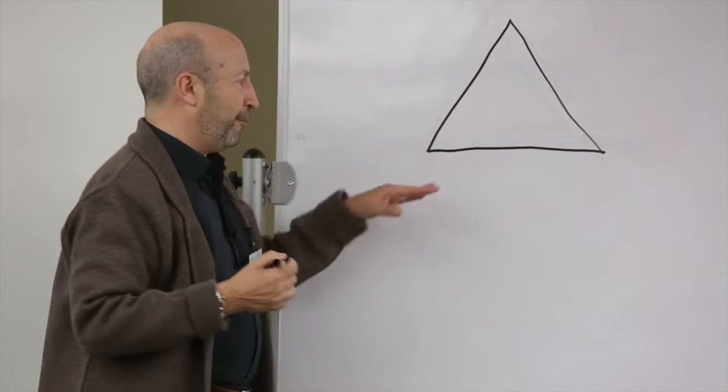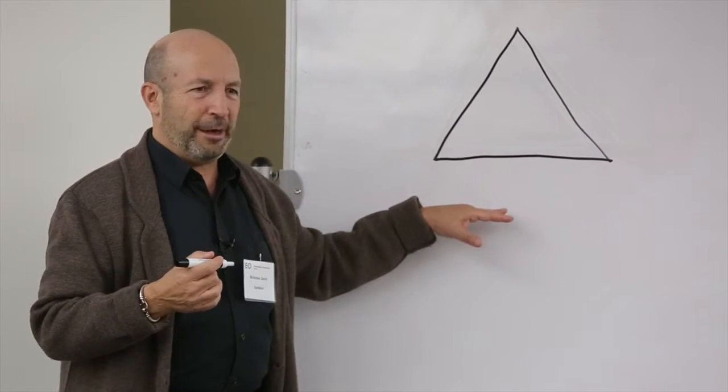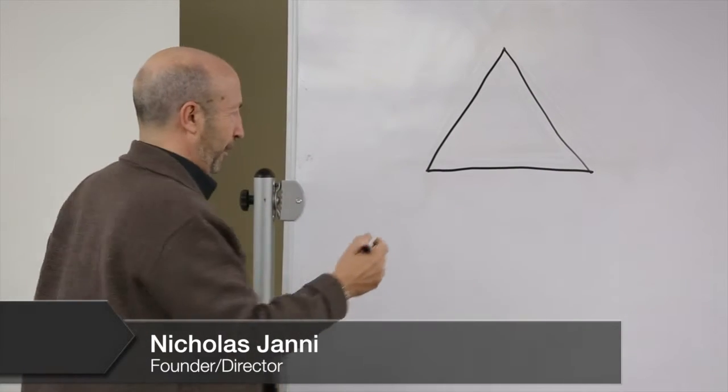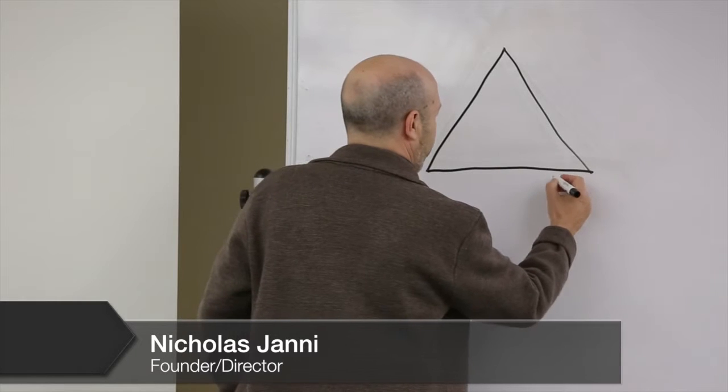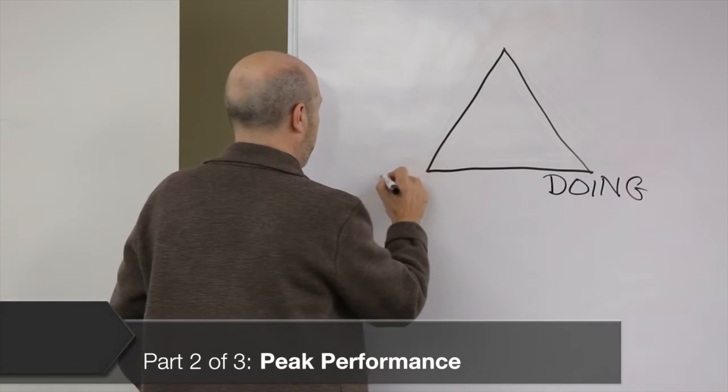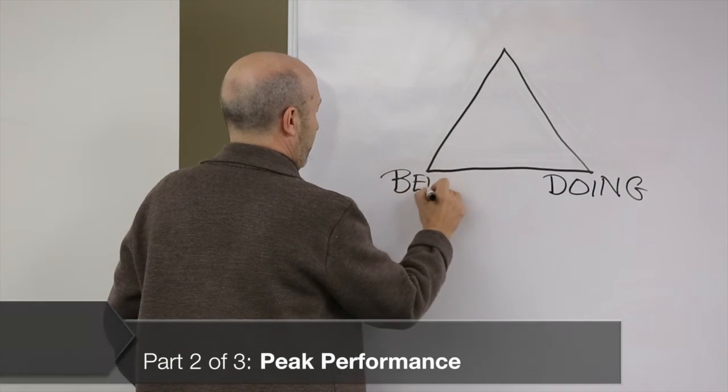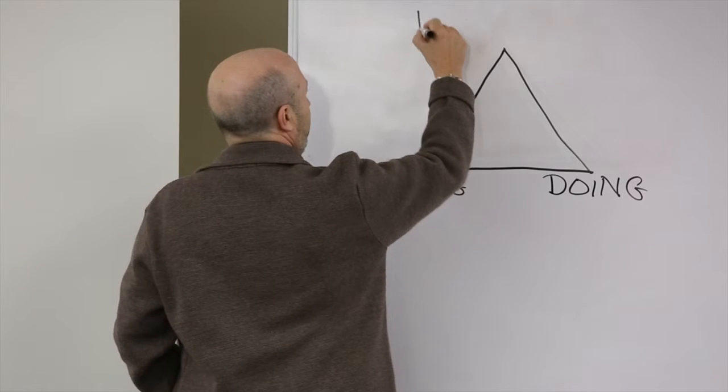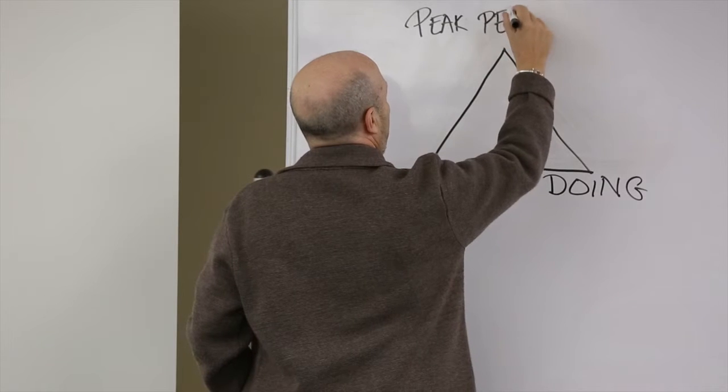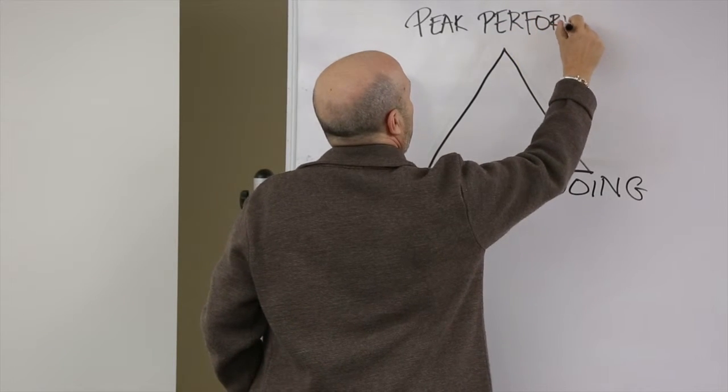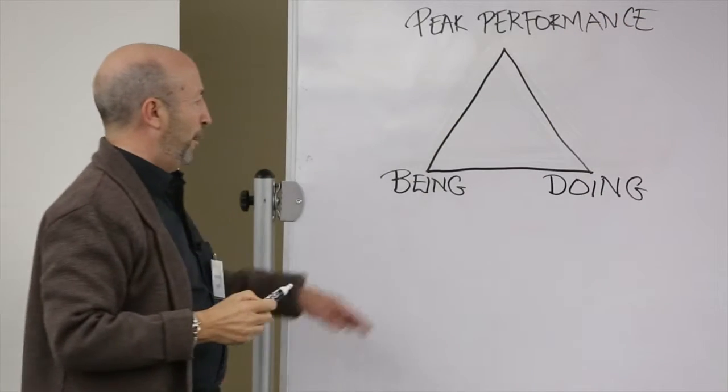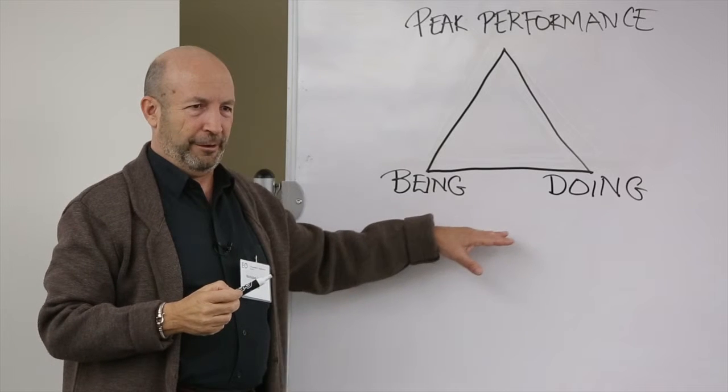What I'm going to do is say that we have two modalities, polarities if you like, as human beings in terms of how we operate. I'm going to call one doing and one being, and I'm going to suggest that peak performance is what lies at the top of the triangle, meaning that peak performance is only possible when there is a genuine integration of these two.